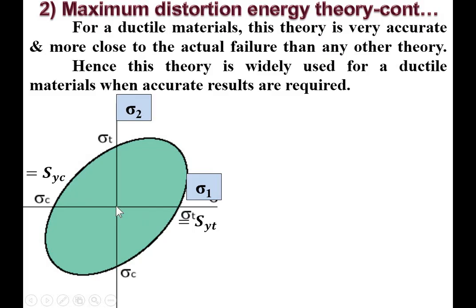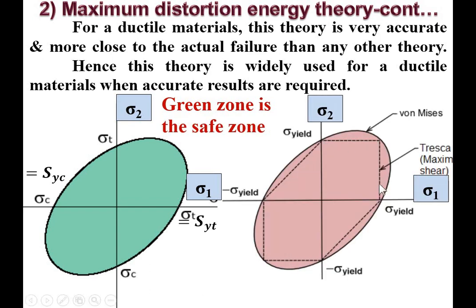Plotting major principal stress on the x-axis and minor principal stress on the y-axis, the safe zone according to maximum distortion energy theory is shown. Comparing with maximum shear stress theory (Tresca theory): the yellow-shaded area represents the safe zone by maximum shear stress theory, while the pink area represents the safe zone by von Mises (maximum distortion energy) theory.